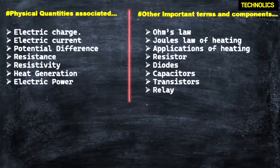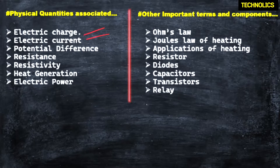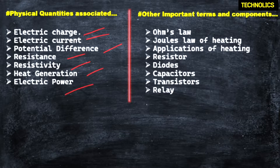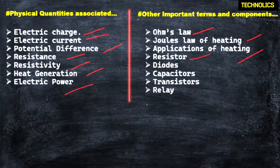Next, we are going to learn some interesting topics in this video. First: physical to electrical charge, current, potential difference, resistance, resistivity, heat generated, and electrical power. The basics of electricity include a lot of important terms. The applications include heating, resistor, diode, capacitor, transistor, and more. We will discuss this in the video.